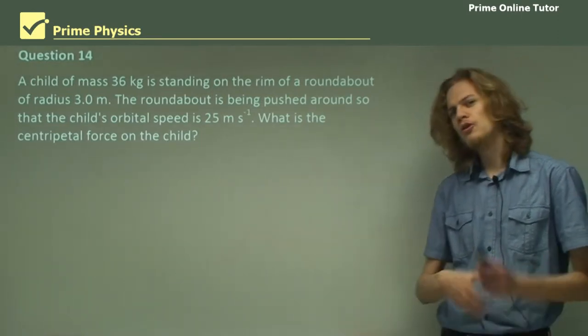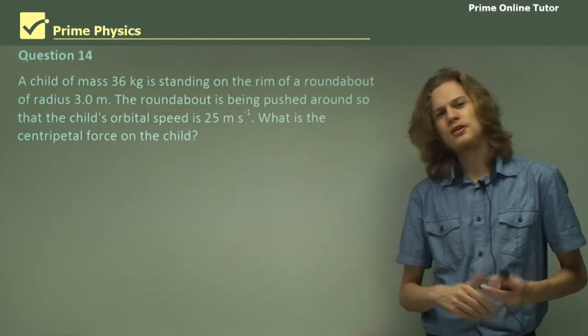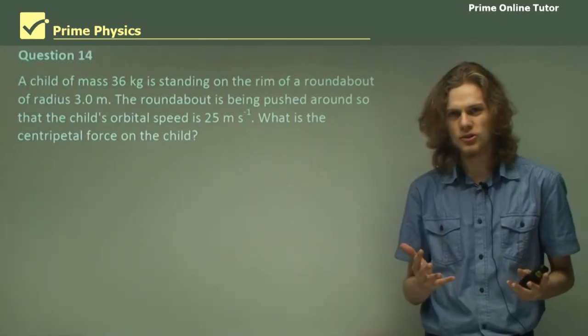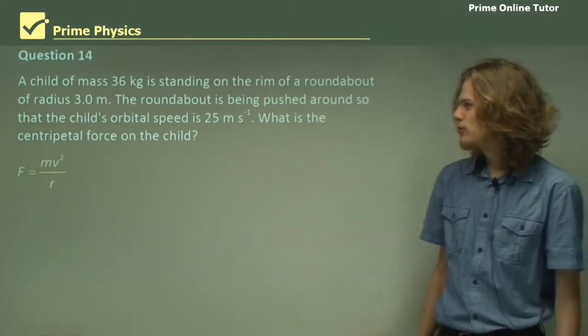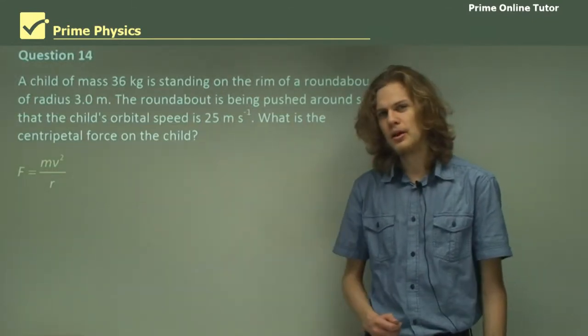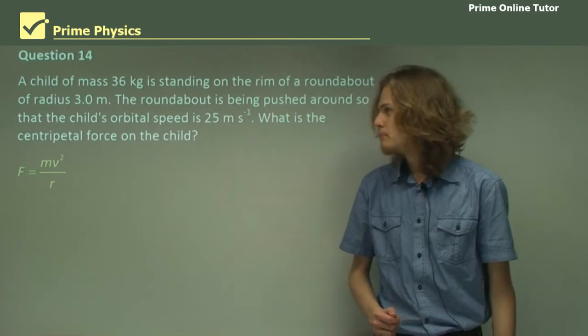Alright, so how do we go about figuring this out? Well, we should use the equation for centripetal force. As our equation, F equals mv squared on R. Now what do we substitute into it?